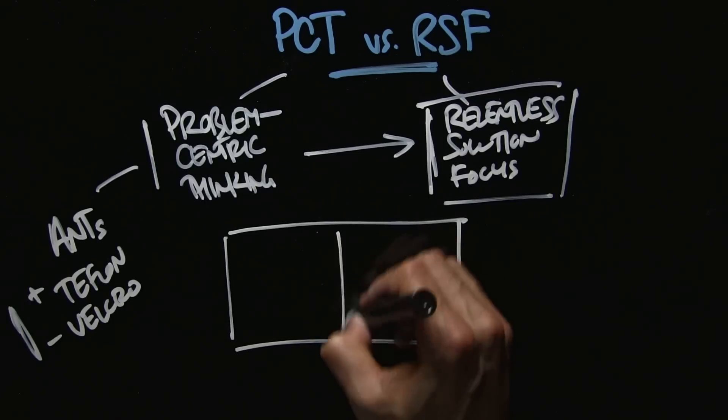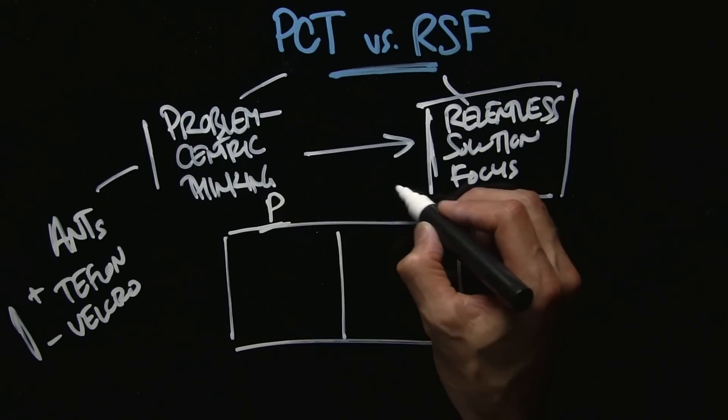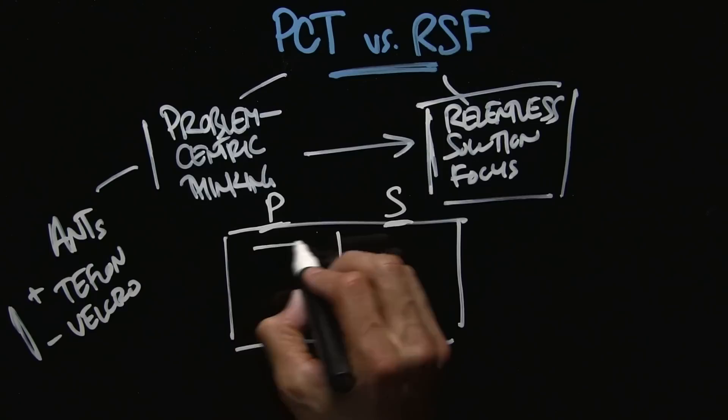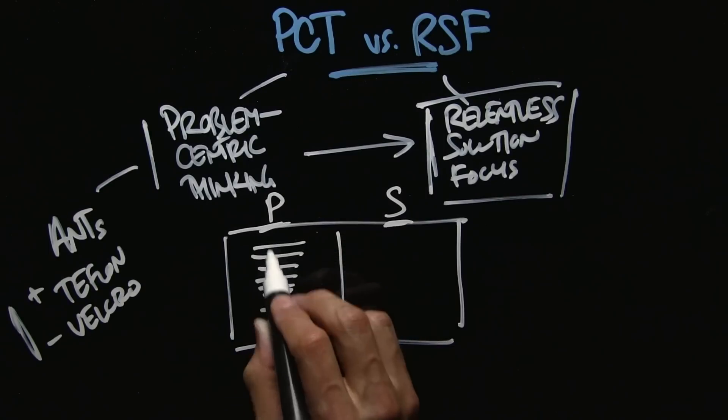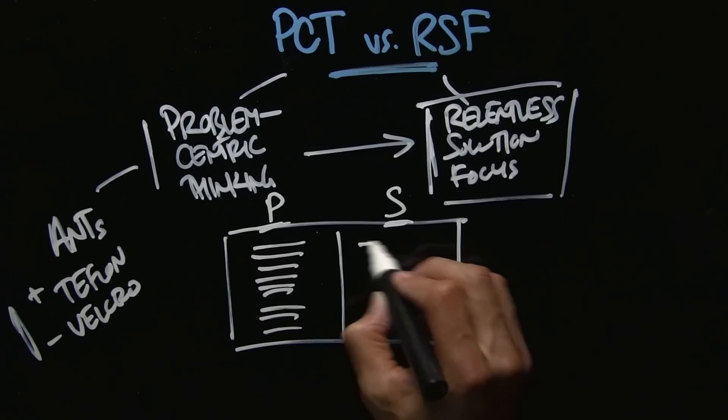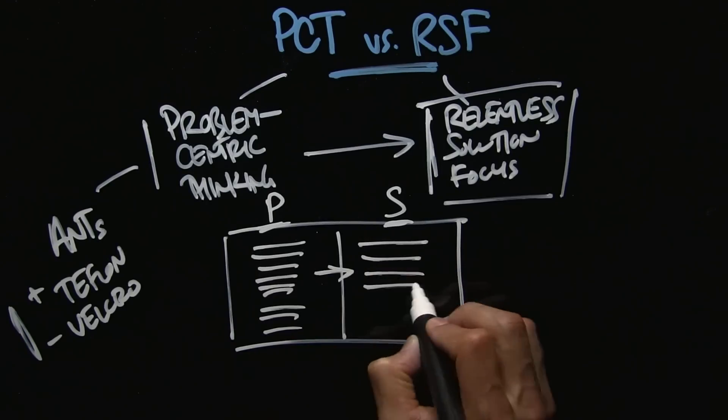Imagine if you have this whiteboard. Problems on one side, solutions on the other. How's your whiteboard look? Do you have a ton of problems you're constantly obsessing about? Or are you focused on transitioning these into solutions?